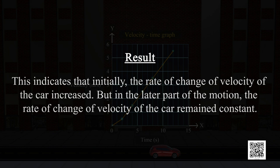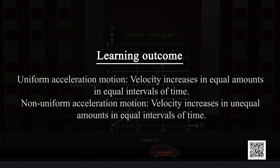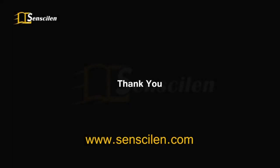This indicates that initially the rate of change of velocity of the car increased, but in the later part of the motion, the rate of change of velocity of the car remained constant. Learning Outcome: In Uniform Acceleration Motion, velocity increases in equal amounts in equal intervals of time. In Non-Uniform Acceleration Motion, velocity increases in unequal amounts in equal intervals of time.